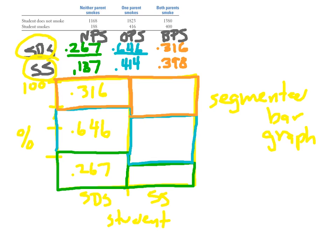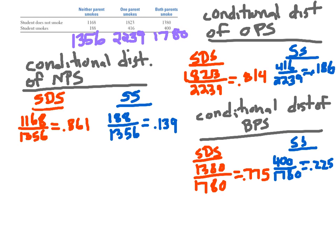This is a segmented bar graph showing the conditional distribution for student smoking behavior — it combines the two plain bar graphs we did before. How would you analyze this graph? One interesting thing: the green bars are taller for students who don't smoke, whereas the orange bar is bigger for students who do smoke. This tells you that more students who don't smoke have parents that don't smoke, and more students who do smoke have both parents who smoke.